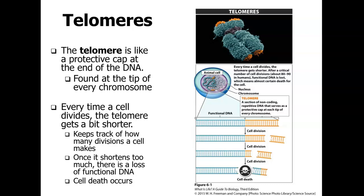Looking at the picture, you're going to see two sister chromatids, or chromosomes, and at the ends of them, the orange sections are going to be those telomeres. With the telomere there, you can look further down the section.